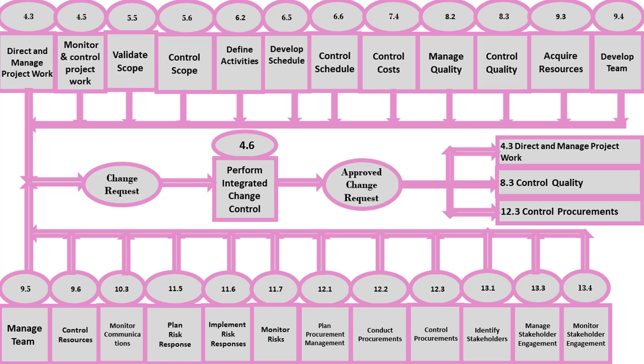Approved change requests can also modify the formally controlled project management plan components or project documents. Once the project manager receives an approved change request, it is his responsibility to ensure it is implemented in the Direct and Manage Project Work process. For example, if the change request calls for the replacement of a defective unit, the project manager conducts the Direct and Manage Project Work process and has the defective unit replaced.